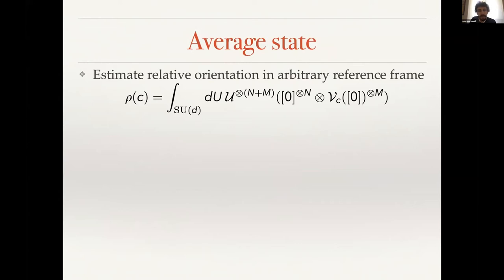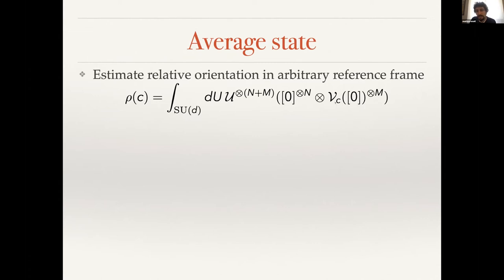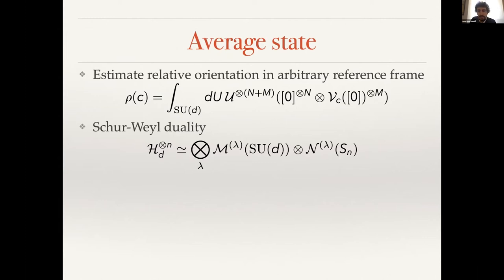Let's see our procedure to derive the optimal measurement. The first step is to write down the average state seen by the device for a fixed value of the overlap. This is done by noticing that we are trying to estimate the relative orientation between states psi and phi in an arbitrary reference frame — the reference frame is given by an average over the unitary group applied to all states in the system. What we want to estimate is the relative angle between the two states.